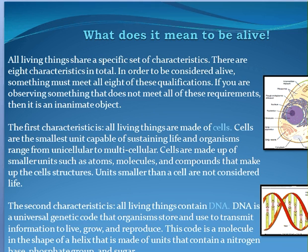The second characteristic is that all living things contain DNA. From other science classes, you've probably learned that DNA is a universal code where organisms store all the information used for body processes and everything that needs to be made — it's like the blueprint for everything. It's in the shape of a helix, like a twisted ladder, made up of four bases: A, T, G, and C. A always binds with T, and G always binds with C.